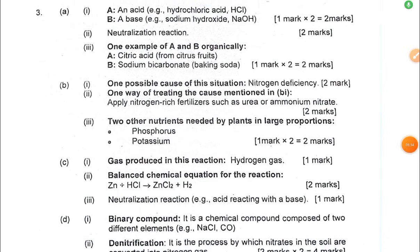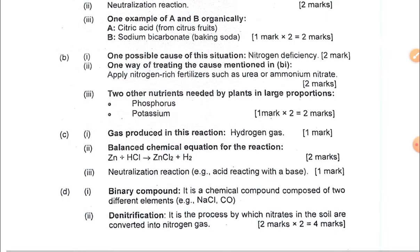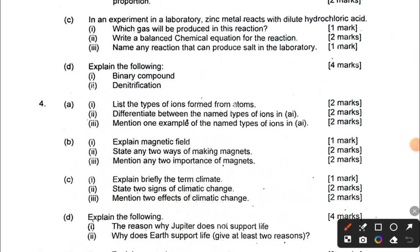For question 3a, the acid is HCl and the base is sodium hydroxide. For 3b, the yellow coloration of leaves indicates nitrogen deficiency. For 3c, zinc reacting with HCl gives off hydrogen gas. Definitions of binary compound and denitrification are also required.